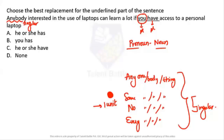So here we have a singular subject, but the pronoun used is 'you,' which is a second-person plural — that's a wrong sentence. The replacement should be 'he or she,' since we don't know the gender of 'anybody.' 'He or she' is singular. Now for singular subjects, can we use 'have'? No — 'have' is for plurals.